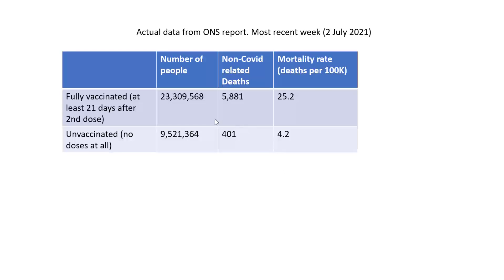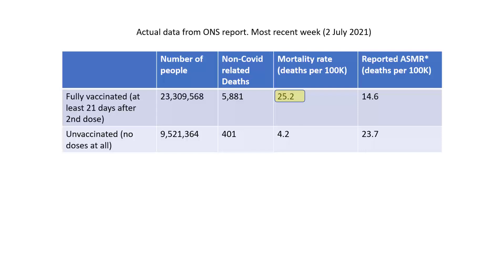While that hypothetical example seems extreme, this real example is potentially even more alarming. This is the actual cumulative Office for National Statistics data on non-COVID-related deaths among the fully vaccinated, the unvaccinated, and the partially vaccinated in England up until July 2021. By that point there were just over 23 million fully vaccinated and just under 10 million completely unvaccinated (excluding children). The raw mortality rate among the fully vaccinated is almost six times that of the unvaccinated, yet the ONS only reported the age-standardized mortality rate — for which the unvaccinated rate is almost twice that of the fully vaccinated.